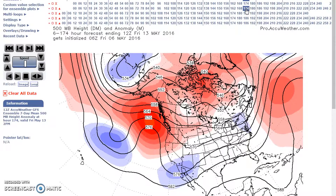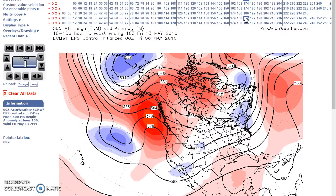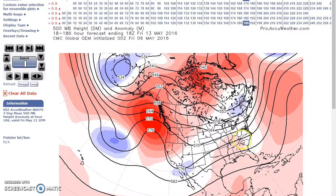We're looking at the GFS ensembles, the European deterministic, the European ensembles, and the Canadian. The Canadian is the least amplified of all, with above-normal heights across Alaska and western Canada. The system exiting the south-central plains is expected to generate storms and scattered to numerous showers, along with below-normal temperatures.